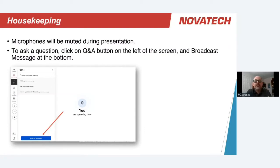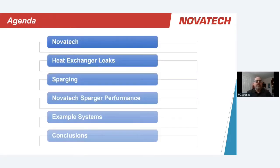If you have a question, please use the chat functionality in the meeting. You can type your questions by clicking on the Q&A and broadcasting a message. We'll have a few minutes at the end of the presentation to respond, and if not we'll definitely follow up. Today's agenda is as follows: we'll spend a couple of minutes talking about Novatec.